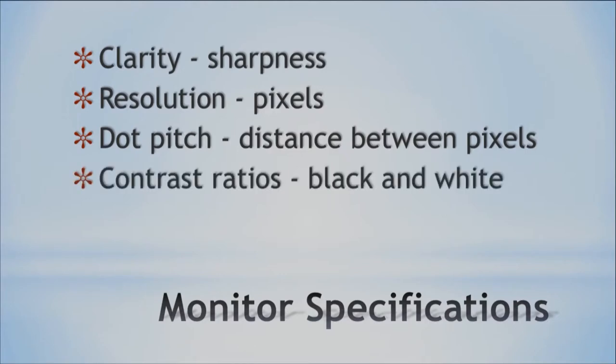We also have the contrast ratio, which is between black and white. Basically, what we're talking about here is: how black is the blackest black, and how white is the whitest white? If the black isn't that black and the white isn't that white, then it's more grayish, and one color is going to get confused with the other. So when you think about contrast ratio, you want the white to be super white and the black to be super black — therefore, all the colors in the middle are really well defined. That is another special characteristic of your monitor.